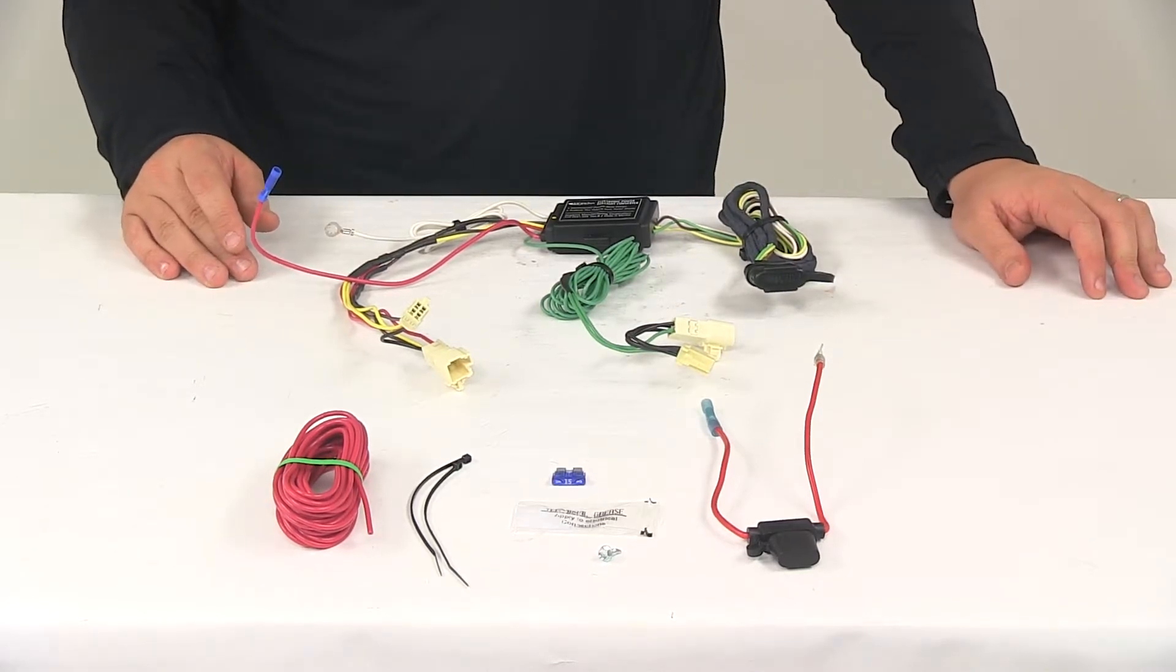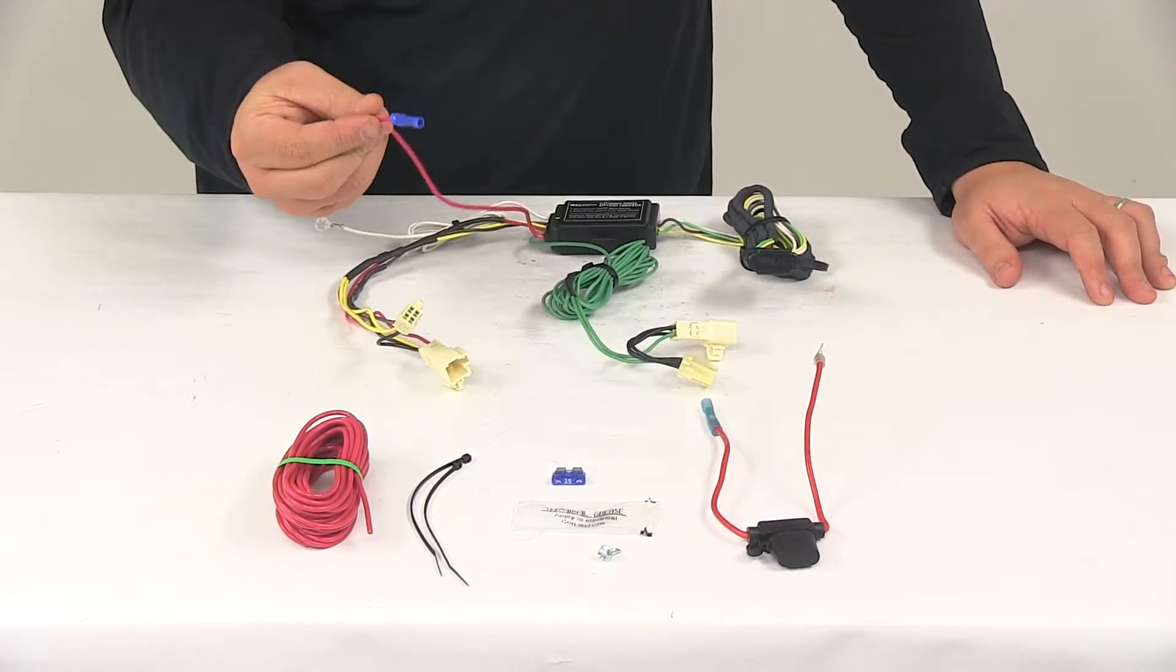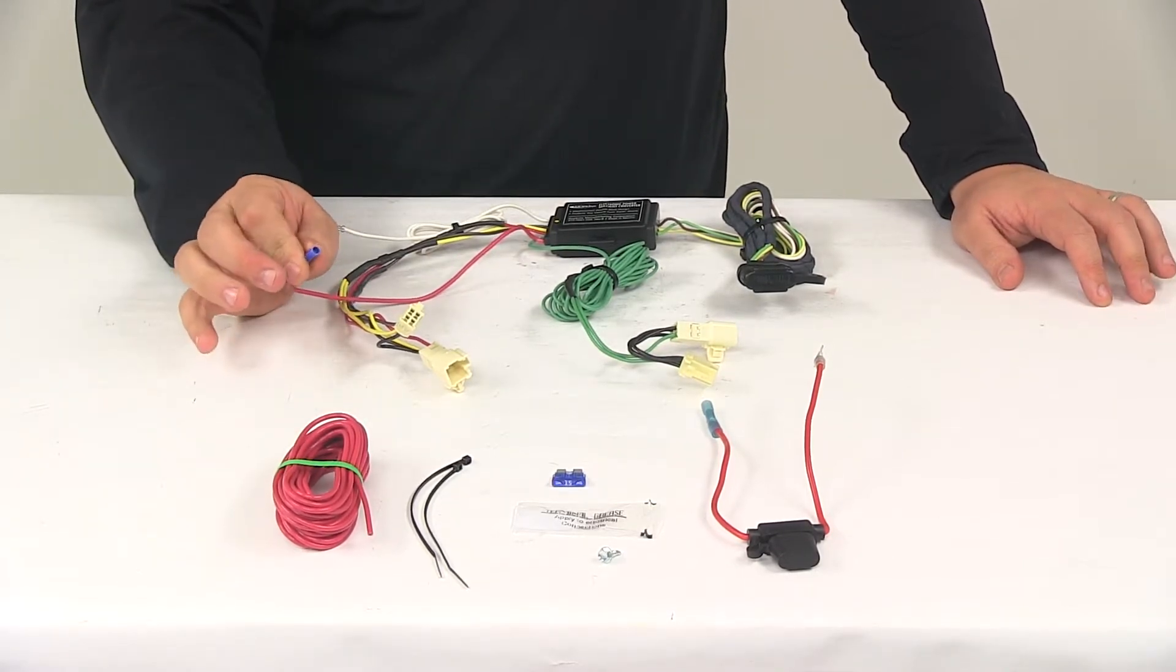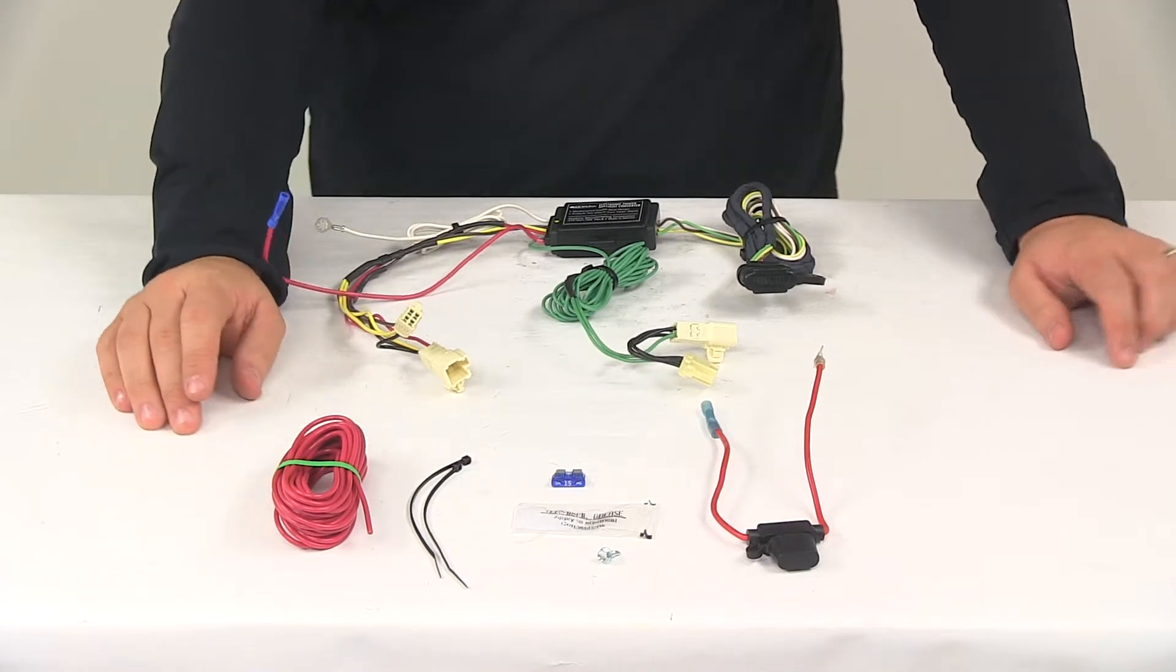Then you'll need to run the hot lead to the vehicle battery. This wire right here is your hot lead. This gets connected to one end of the bundle. It's got the butt connector already attached to it. The other end of the bundle runs to the vehicle battery.